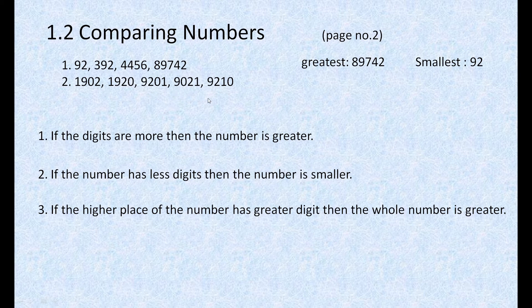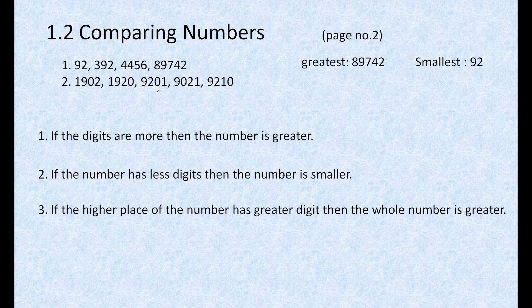Now we have two numbers remaining. We want only one greatest number, so we go to the next place — the 10s place. In 9201, the 10s place has 0 as the digit. In 9210, the 10s place has 1 as the digit. Since 1 is greater than 0, the greatest number here is 9210.